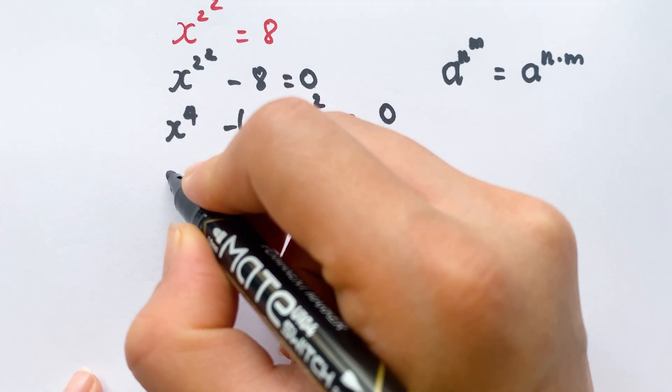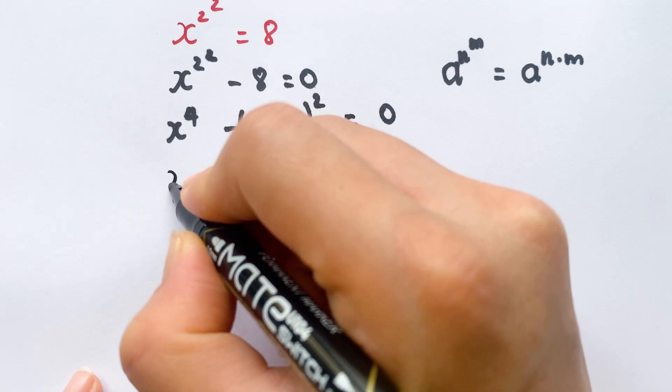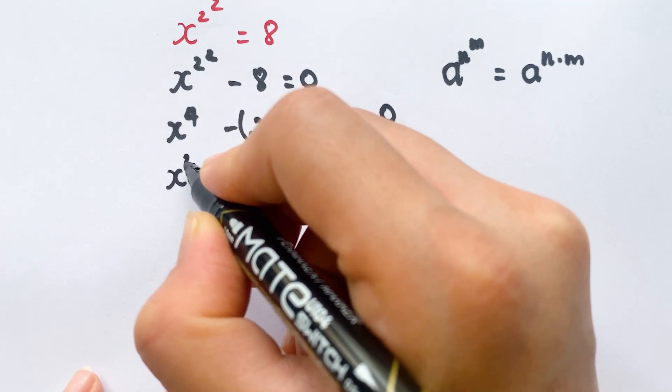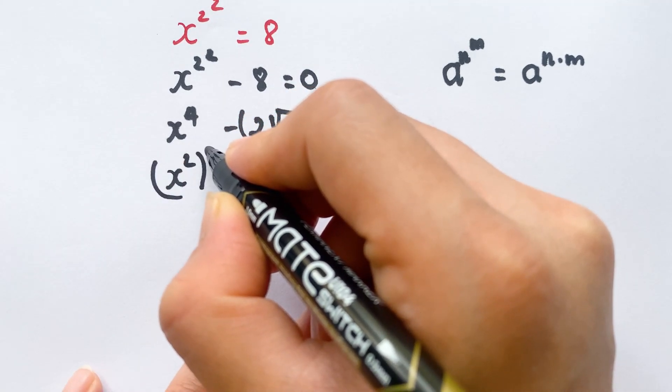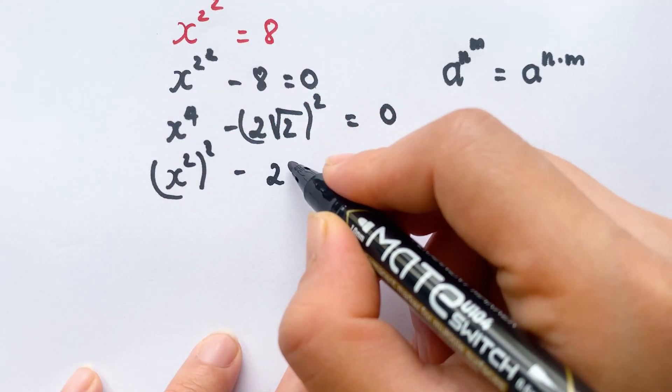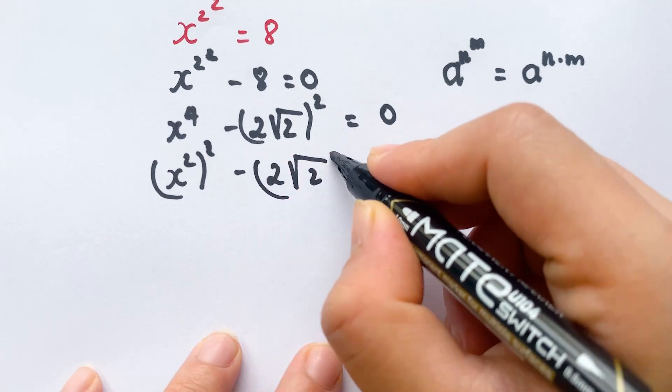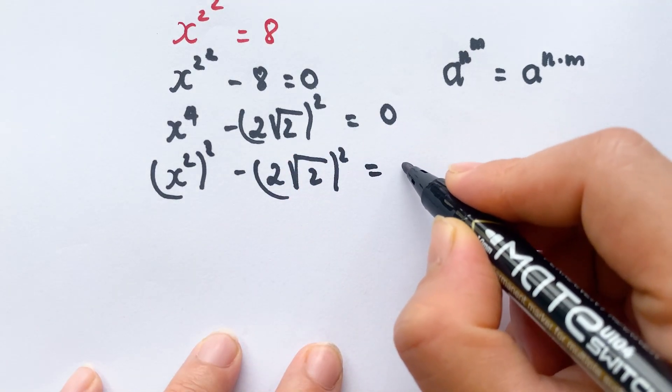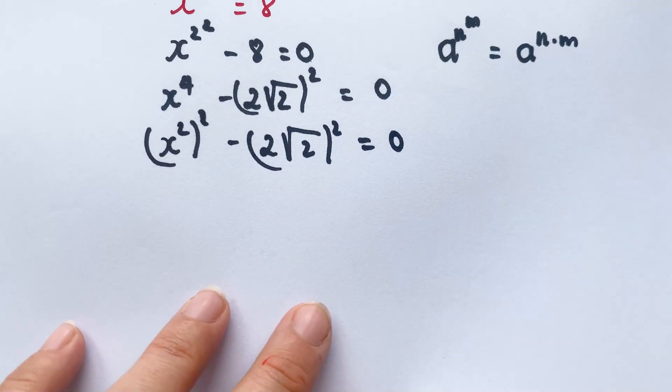We can rewrite x^4 as (x^2)^2, so we have (x^2)^2 - (2√2)^2 = 0.